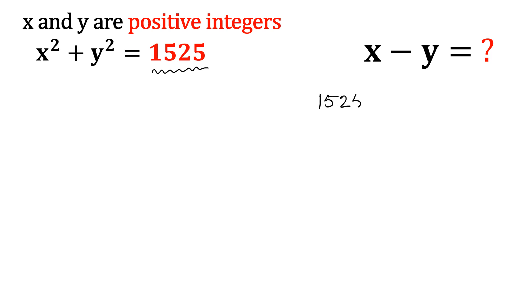If I factorize 1525, then I can write this as 25 times 61, that means 5 square times 61. So let me write that factors here: 5 square times 61.